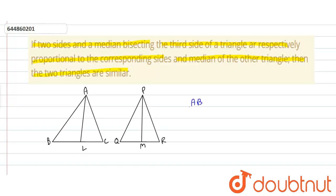AB upon PQ is equal to BC upon QR is equal to AL upon PM.